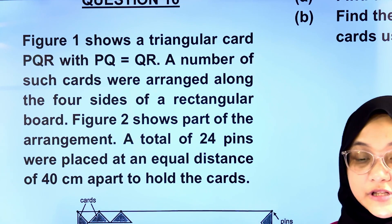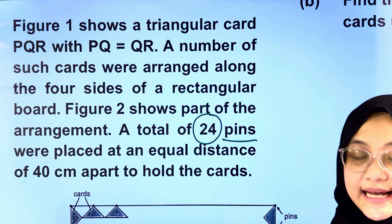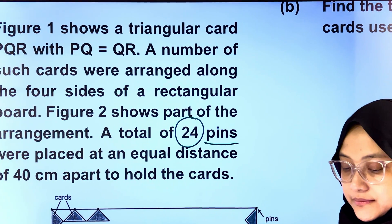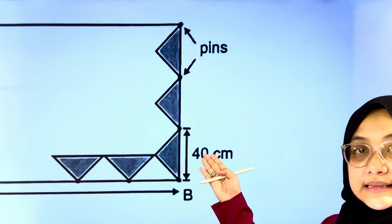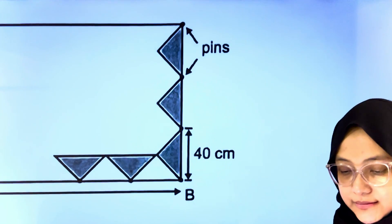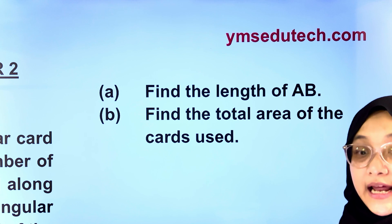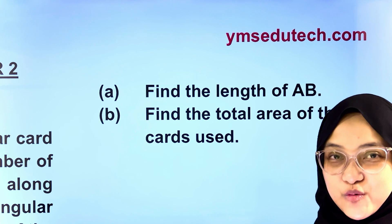A total of 24 pins were placed at an equal distance of 40 cm apart to hold the cards. Let's take a look at the diagram again. There's a gap of 40 cm between two pins. Part A, find the length of AB. Part B, find the total area of the cards used.